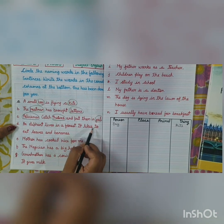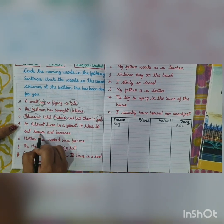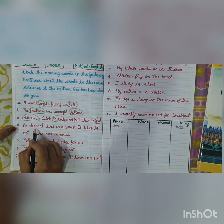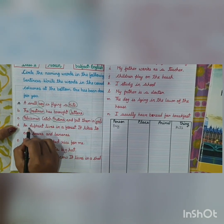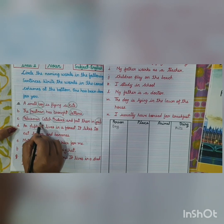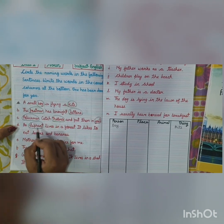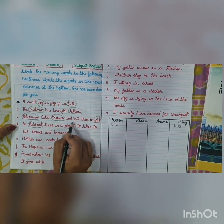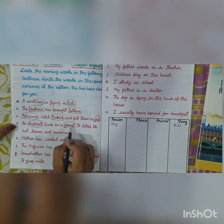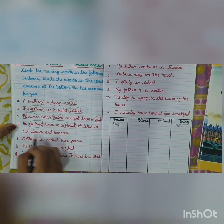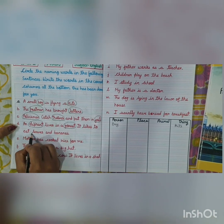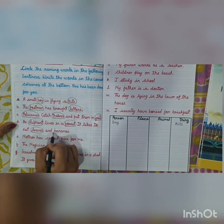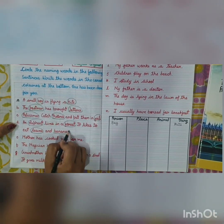An elephant lives in a forest. It likes to eat leaves and bananas. Elephant is an animal, forest is a place, and leaves and bananas are things.